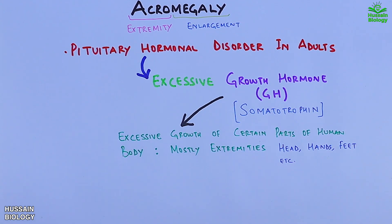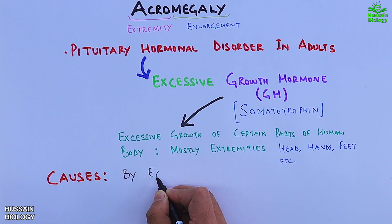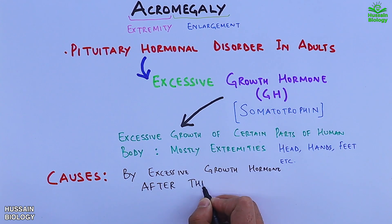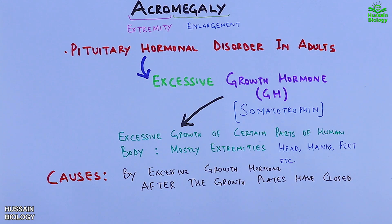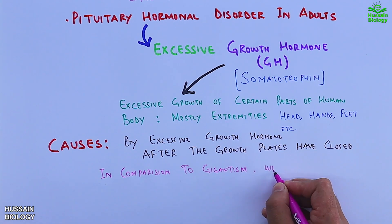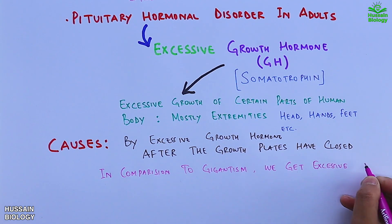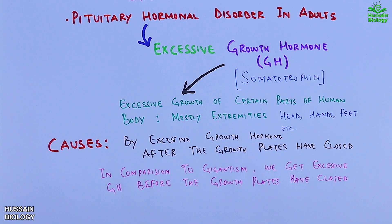The real cause of this disorder is excessive growth hormone after the growth plates have closed. In comparison, gigantism also involves excessive growth hormone, but it occurs before the growth plates have closed. So in acromegaly the growth hormone excess is after closure, while in gigantism it is before closure.